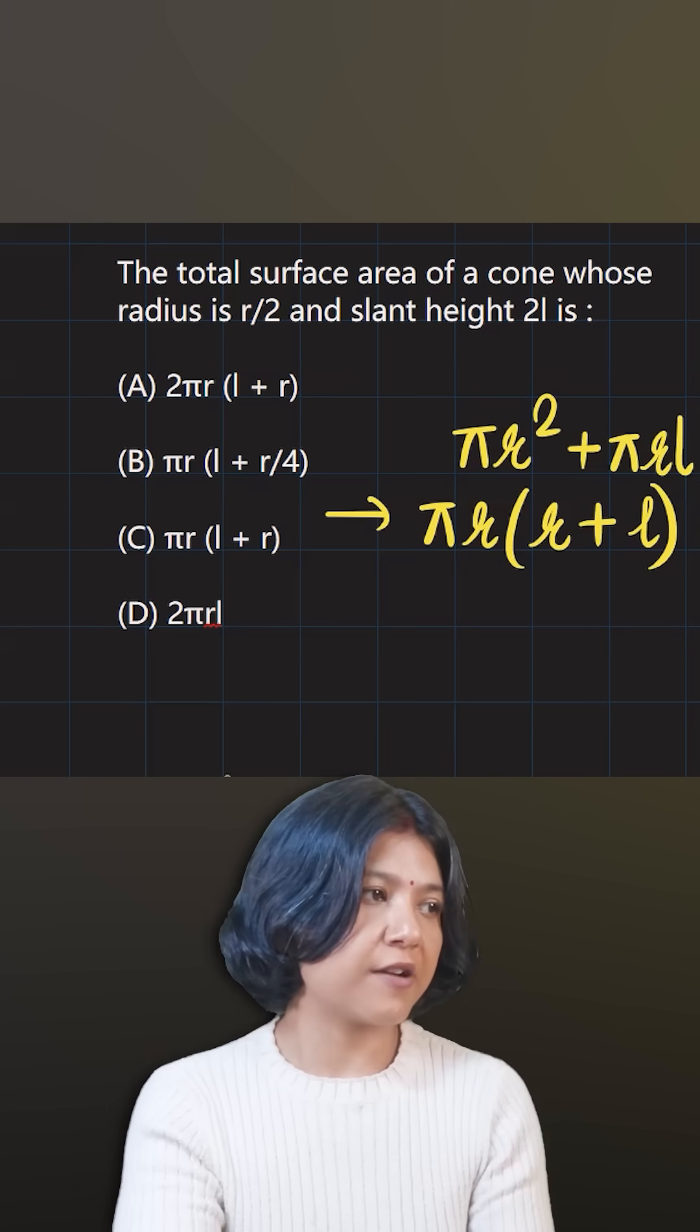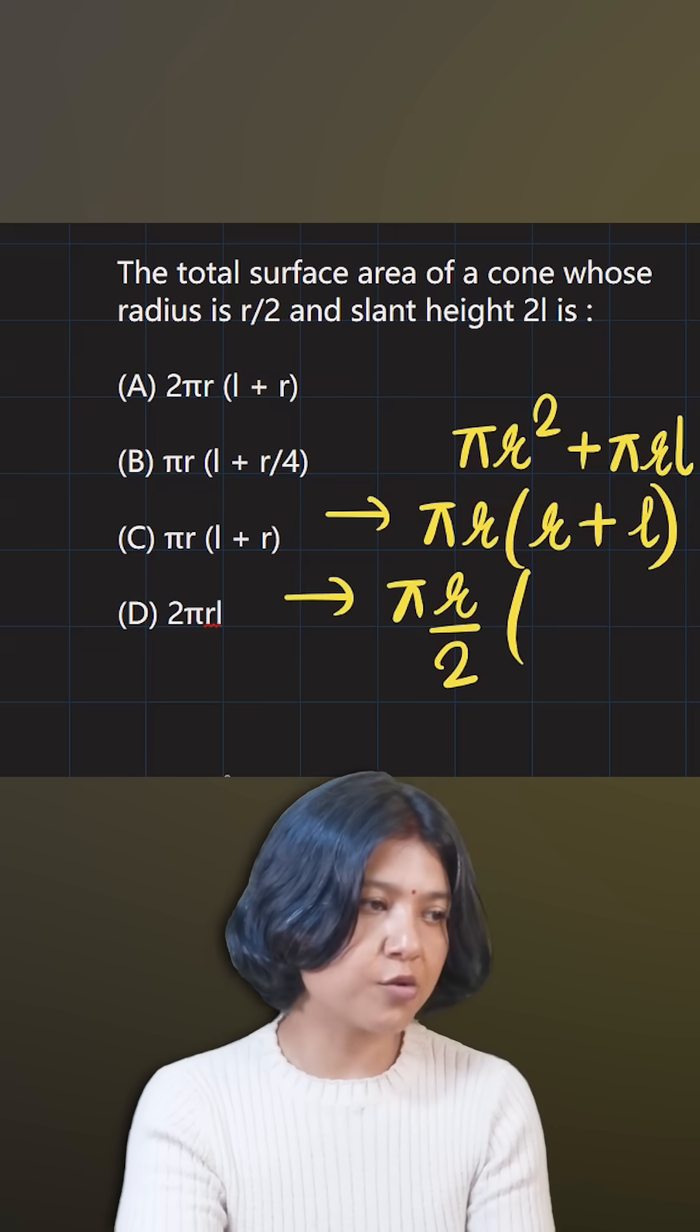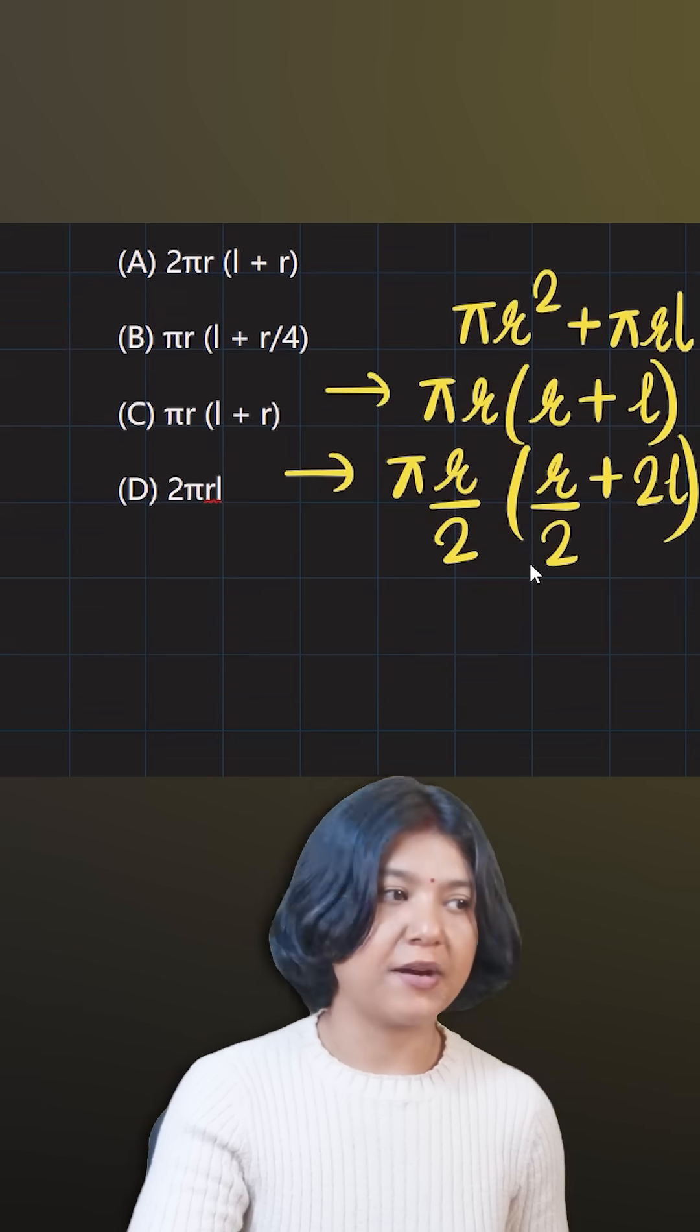Now the question tells you that your radius has been halved, so instead of r I'm going to write r by 2, and slant height has been 2l. The new slant height is double the original, so this is what I can substitute.